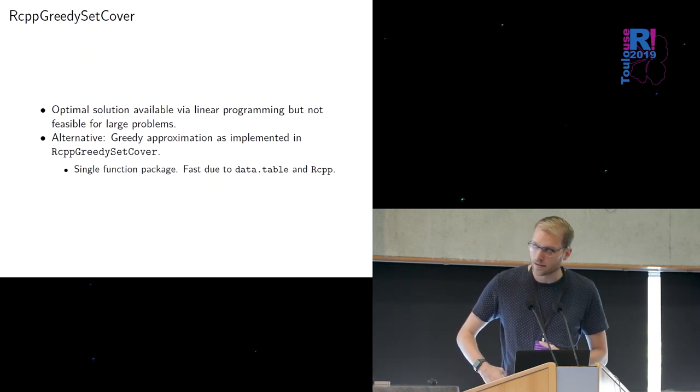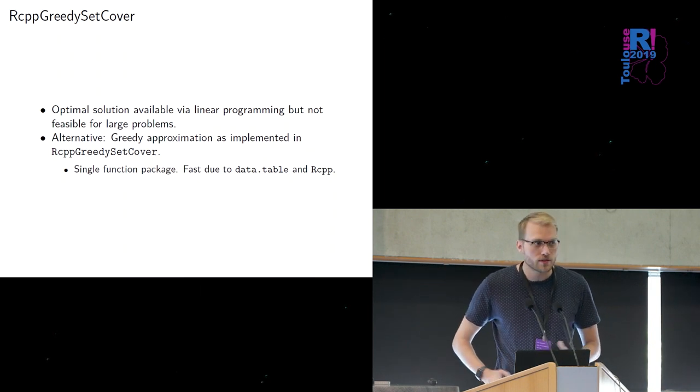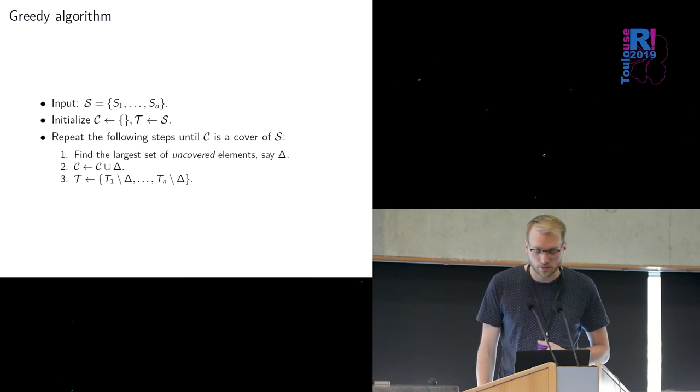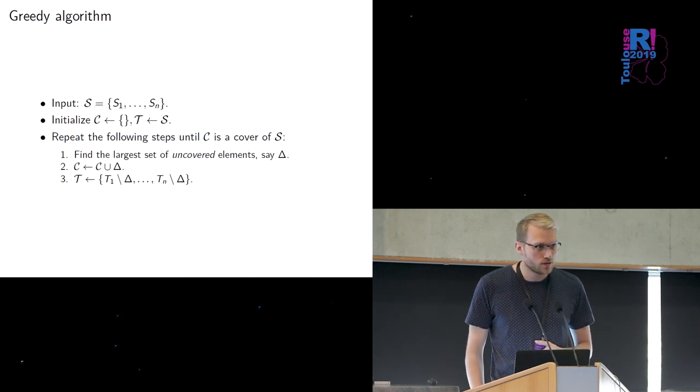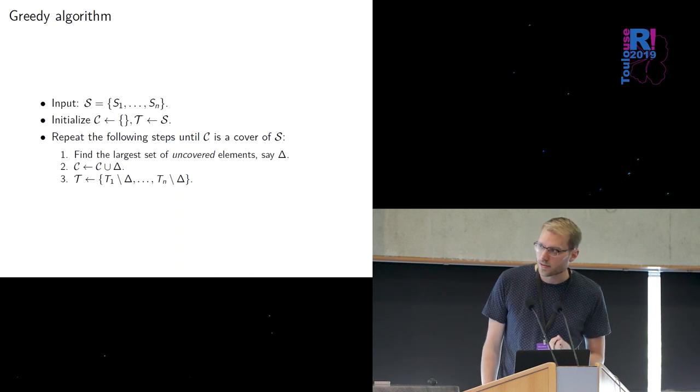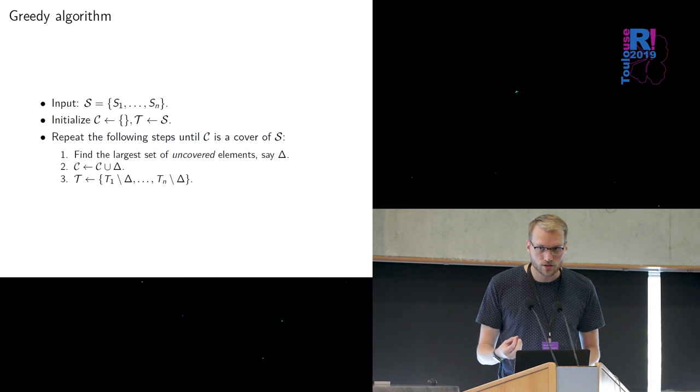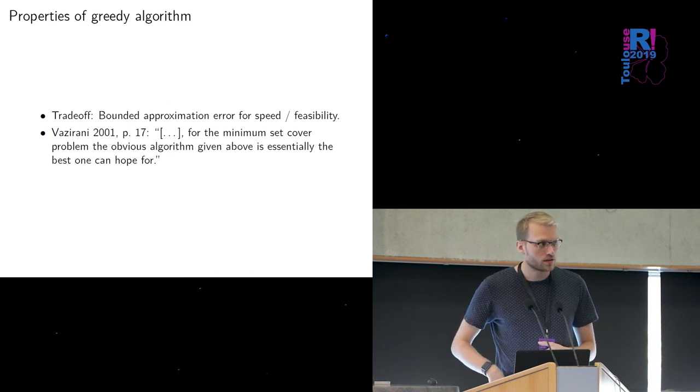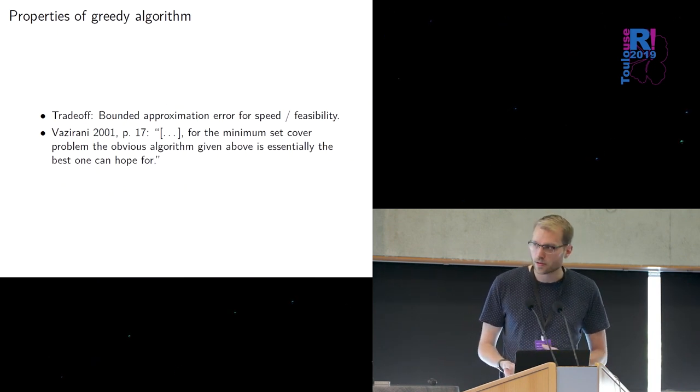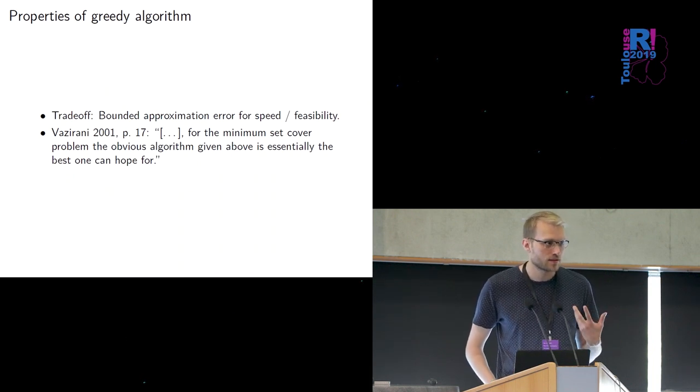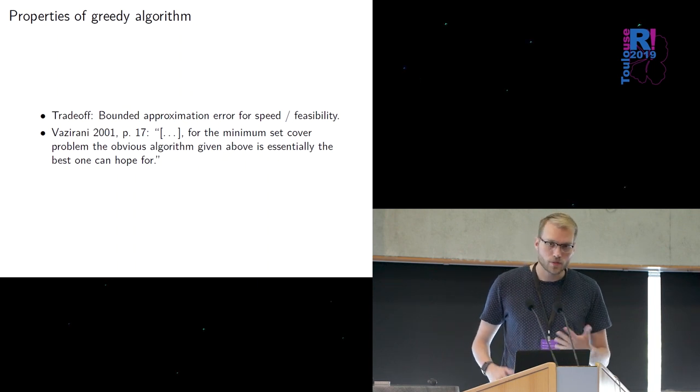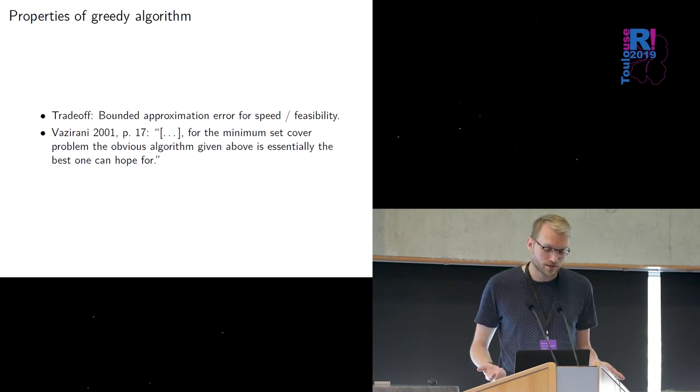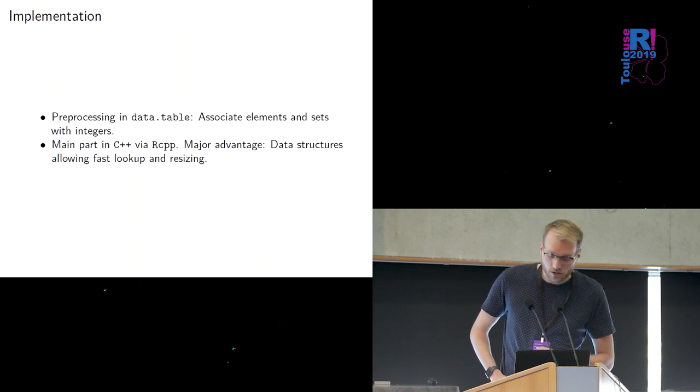So given that everyone can reach hospitals in 30 minutes and you can actually solve this analytically but this is not feasible for large problems such as in our case and so there's a greedy approximation available and this package implements this solution and it's fast because we use Rcpp and data.table. The algorithm is really easy you basically just always search the largest number of uncovered elements and you put it in the solution then you mark those elements as covered and then you repeat the steps until you get a cover. So this is basically the simplest thing you can think of but it can be shown that this actually has some pretty nice theoretical properties you basically have a bounded approximation error but what you get in exchange is speed or in some cases just the fact that you can actually do it.